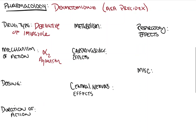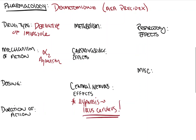It's an alpha-2 agonist and works primarily by exerting its effects on the alpha-2 receptors in the CNS. It works to cause hypnosis — or puts our patients to sleep — by acting at the locus coeruleus in the brain. Alpha-2 agonism at the locus coeruleus causes hypnosis; this will come up on your exams. It also causes analgesia via its operation on the alpha-2 receptors in the spinal cord.